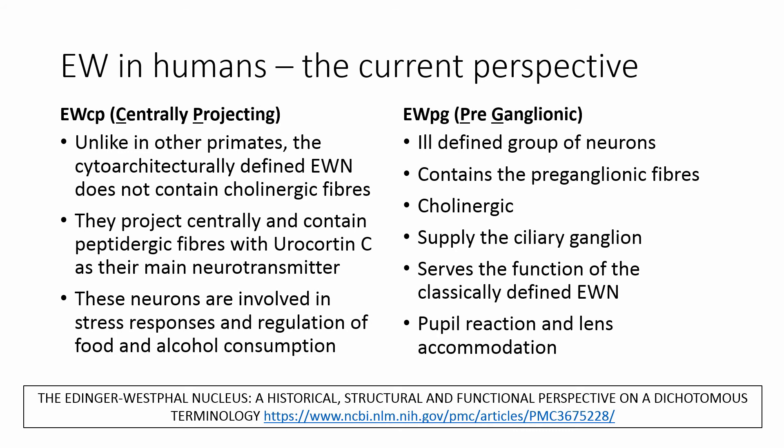Whereas the pre-ganglionic fibers that really supply the ciliary ganglion arise from an ill-defined group of neurons anteromedial to the oculomotor nucleus. They are cholinergic and serve the function of the classically defined Edinger-Westphal nucleus, controlling the pupil and lens accommodation. This group of neurons is called Edinger-Westphal nucleus pre-ganglionic, or EWPG.